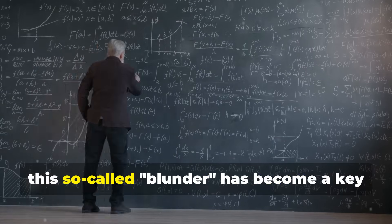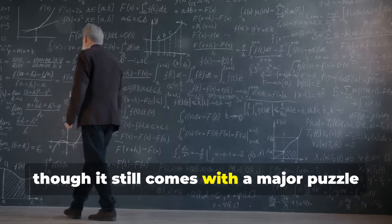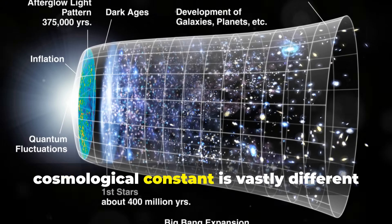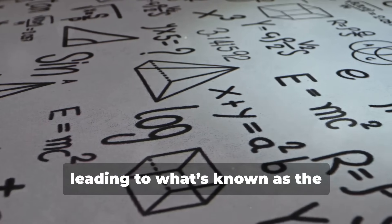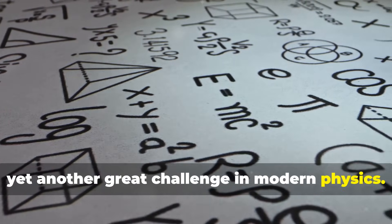Ironically, this so-called blunder has become a key concept in modern cosmology, though it still comes with a major puzzle because the observed value of the cosmological constant is vastly different from what theory predicts. Leading to what's known as the cosmological constant problem, yet another great challenge in modern physics.